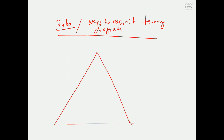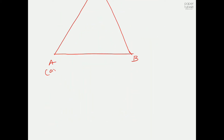I'm going to draw an equilateral triangle. Label the corners: C is your solute, A is your carrier liquid (100%), and B is your solvent (100%).